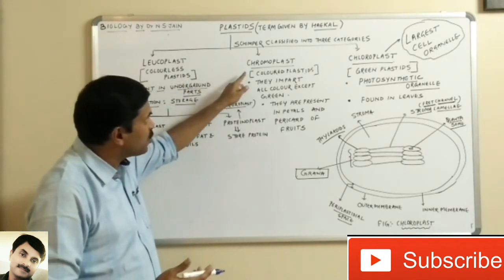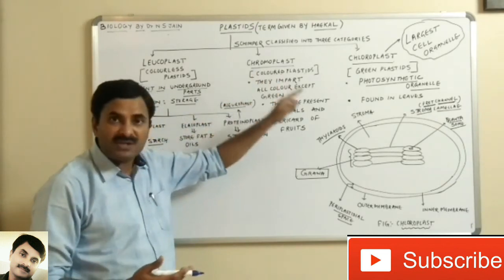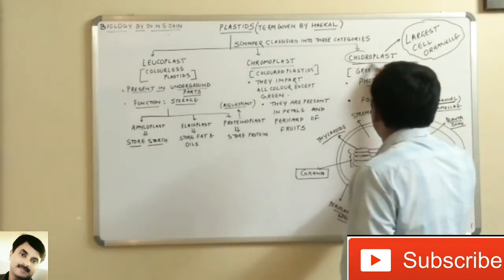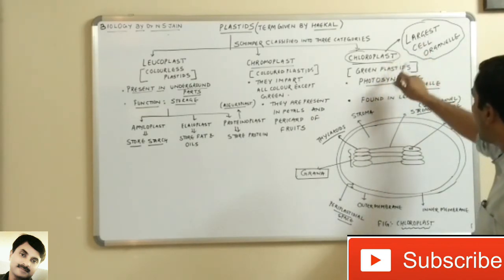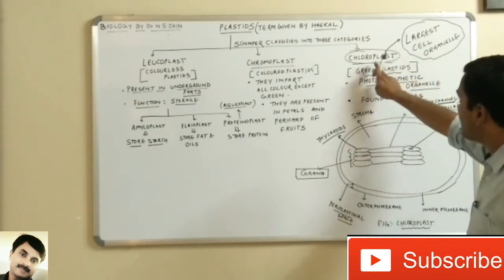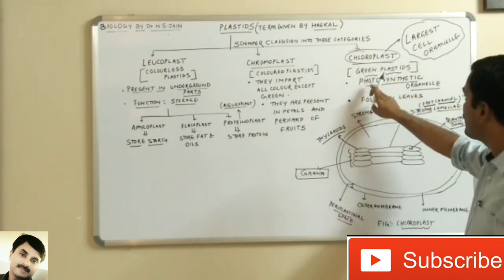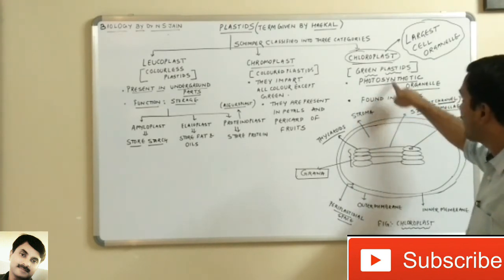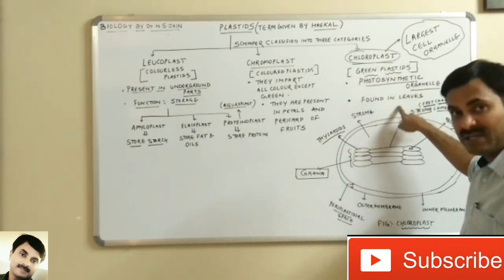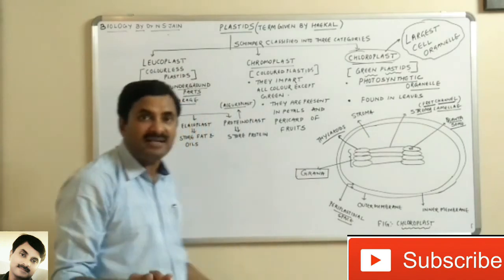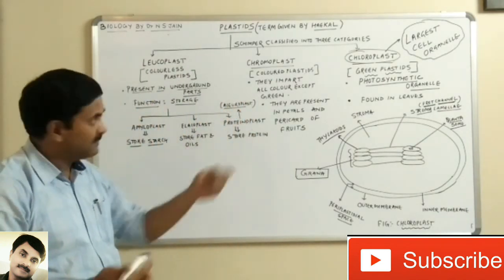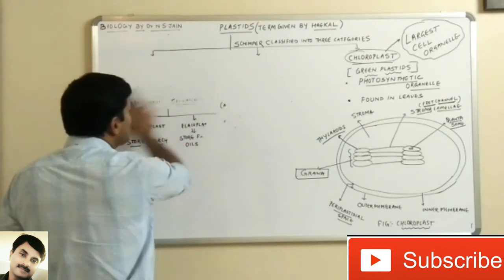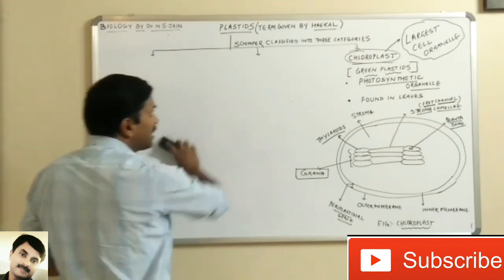The very important plastid we have to study in detail is the chloroplast. Chloroplasts are the green plastids concerned with photosynthesis, and hence they are also called the photosynthetic organelle. Chloroplasts are found in leaves and are designated as the largest cell organelle.